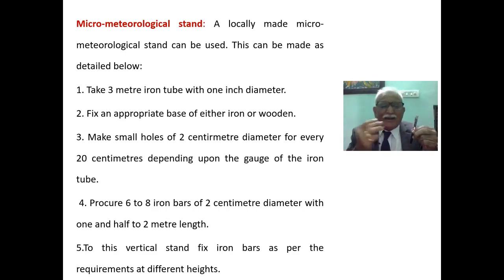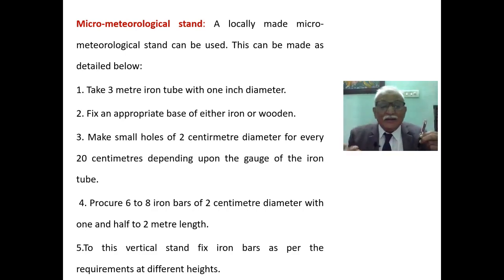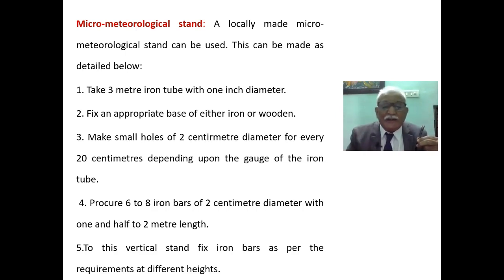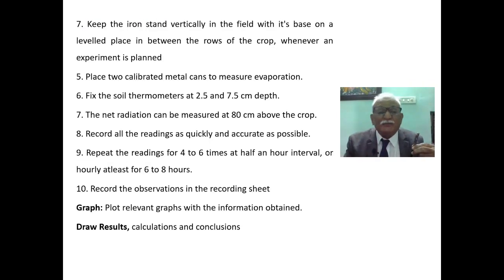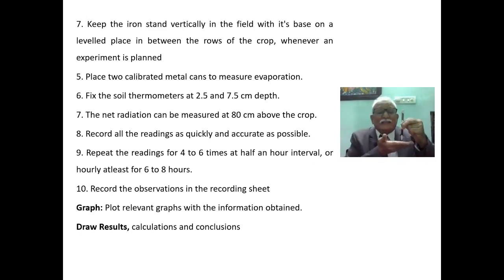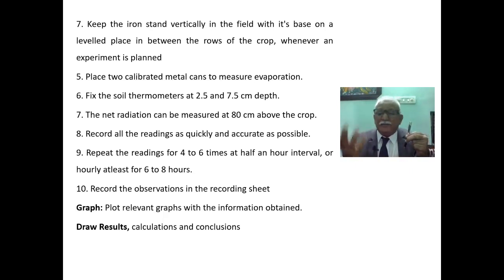Procure 6 to 8 iron bars and fix them to this vertical stand. As per the requirements of your field equipment, keep the iron stand vertically in the field — in the cropped field — with its base fixed in the row of the crop, maybe maize, maybe a cereal crop.